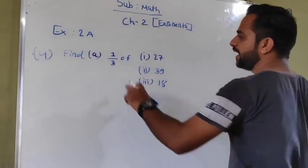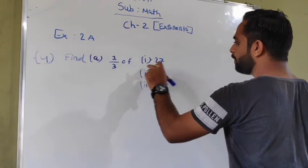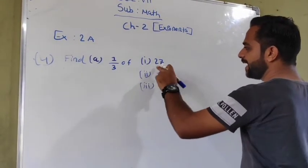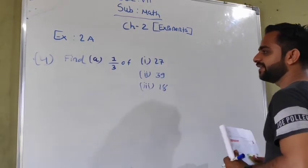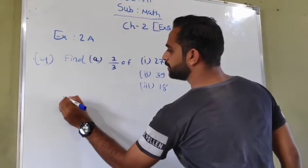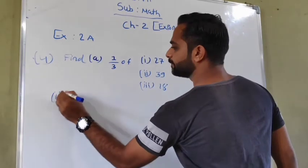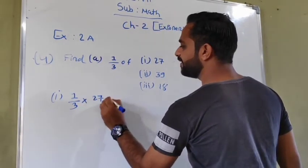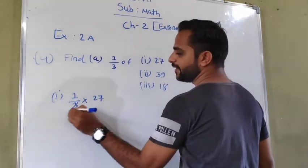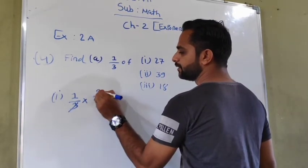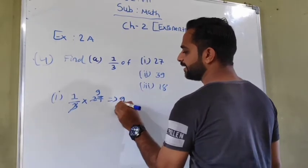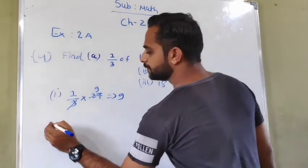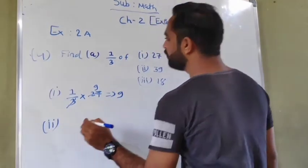Next one is find 1 upon 3 of 27, 39, and 18. So 1 upon 3 multiply by 27. 3 goes into 27 nine times, so the answer is 9.